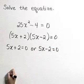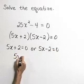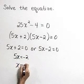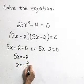And solving each of these linear factors then gives 5x is equal to negative 2, or x is equal to negative 2 fifths.